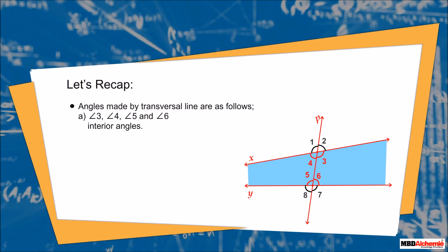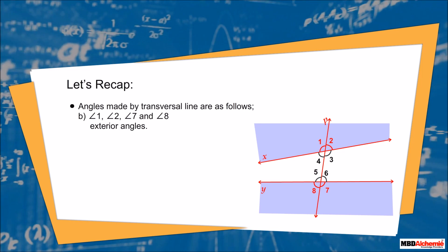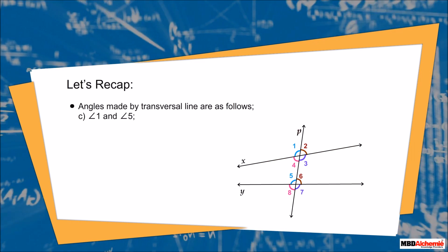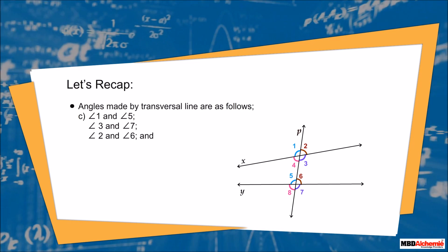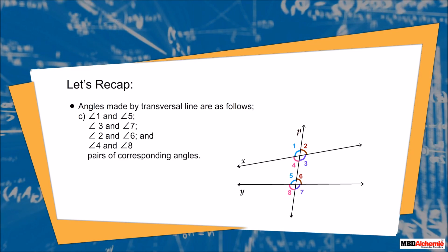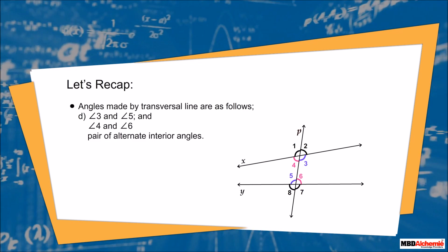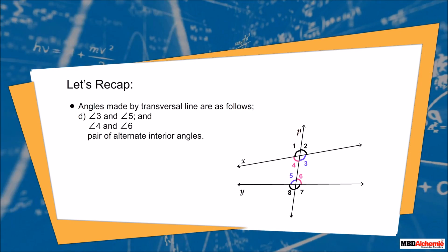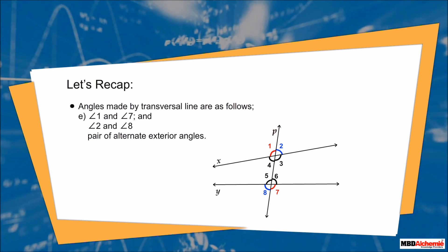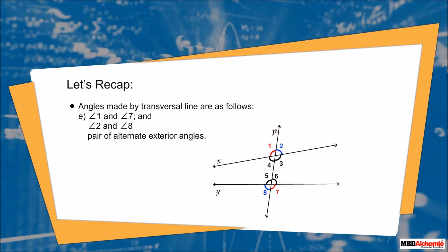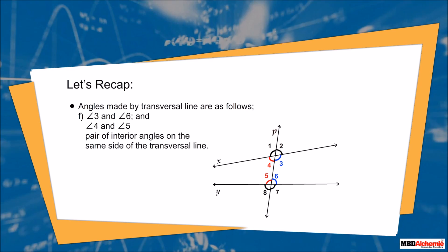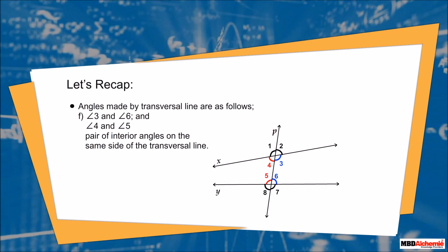Angles 1, 2, 7, and 8 are exterior angles. Angles 1 & 5, 3 & 7, 2 & 6, and 4 & 8 are pairs of corresponding angles. Angles 3 & 5 and angles 4 & 6 are pairs of alternate interior angles. Angles 1 & 7 and angles 2 & 8 are pairs of alternate exterior angles. Angles 3 & 6 and angles 4 & 5 are pairs of interior angles on the same side of the transversal.